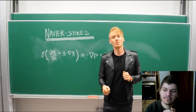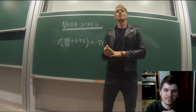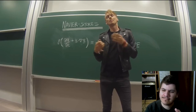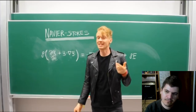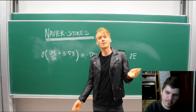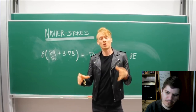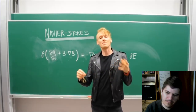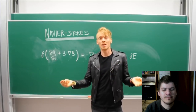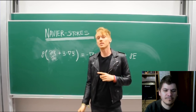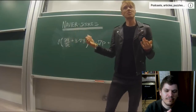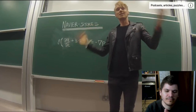It also happens to be one of the Millennium Prize Problems — the seven greatest unsolved mathematical puzzles that still existed in the year 2000. The Clay Institute, along with a group of mathematicians, offered a million-dollar prize for solving any of these problems. In the last 17 years only one has been solved: the Poincaré Conjecture. But the Navier-Stokes equations still remain unsolved — we don't fully understand them mathematically.